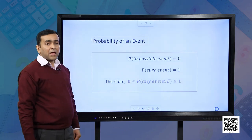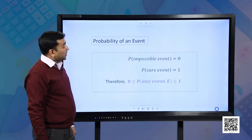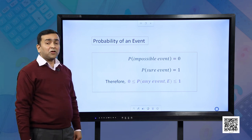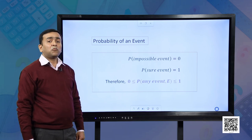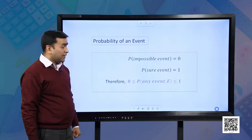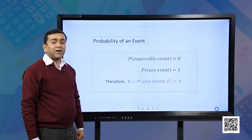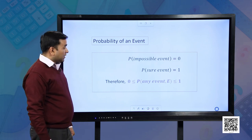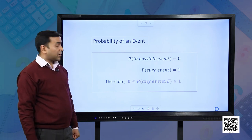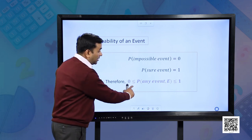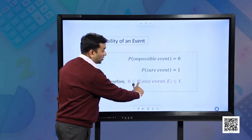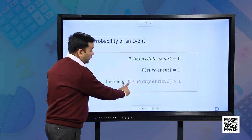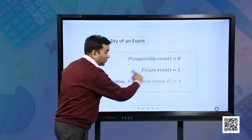Let us recap. The probability of an impossible event is 0 and the probability of a sure event is 1. So, what is the probability of any event? The probability of any event lies between 0 and 1, and mathematically we write it as P(E) greater than or equal to 0 and less than or equal to 1.